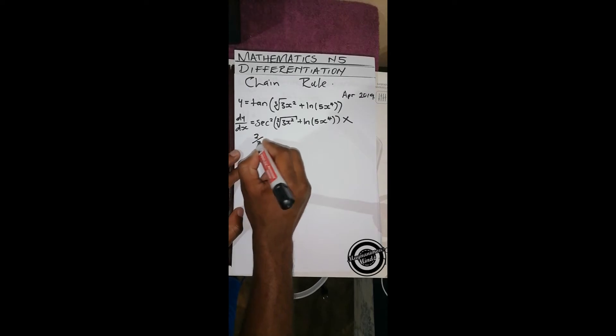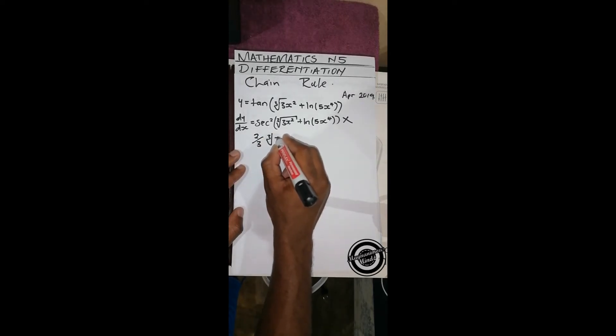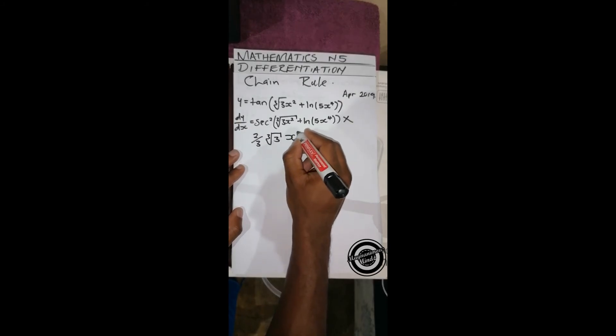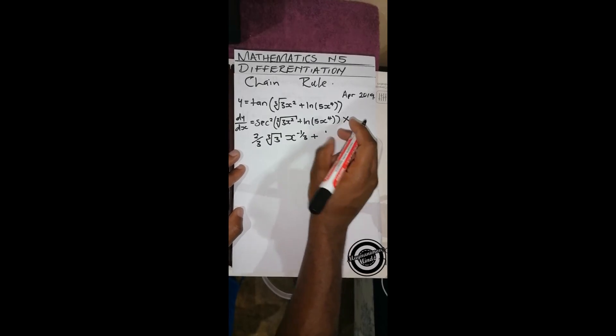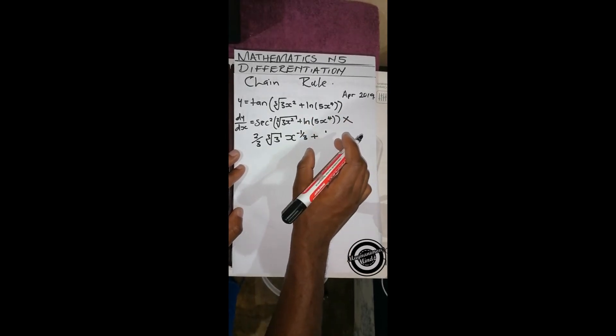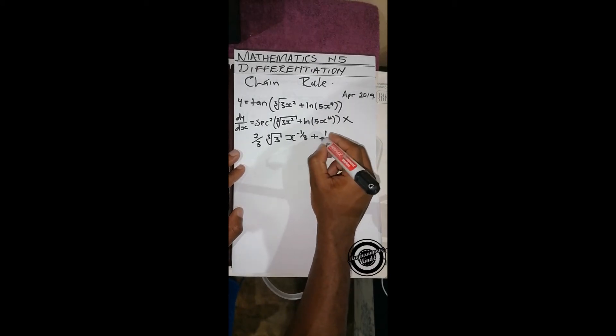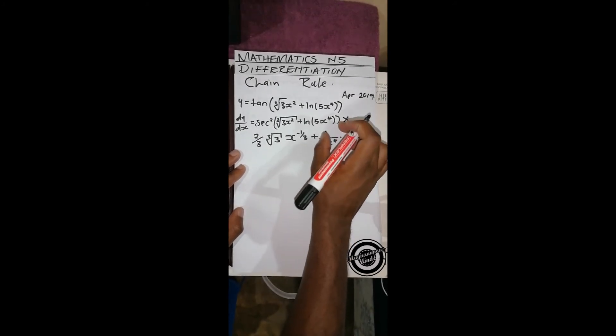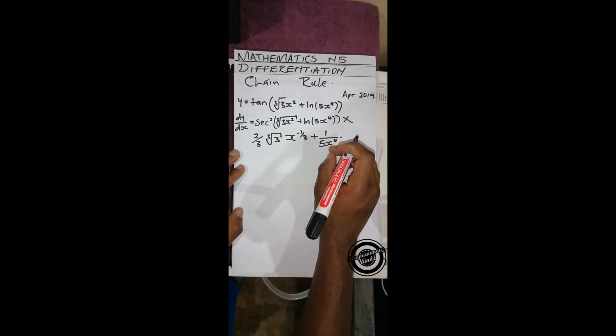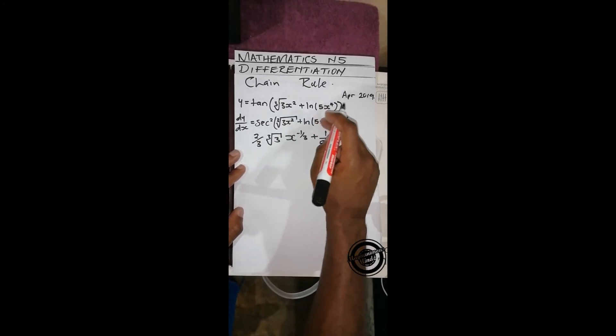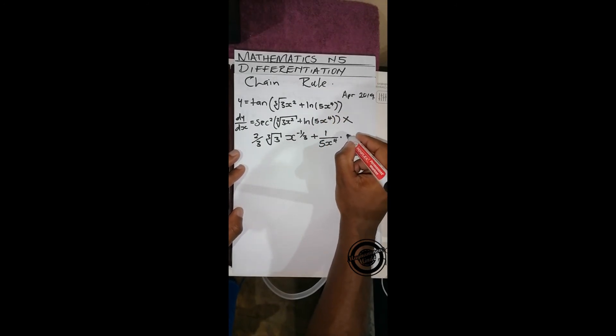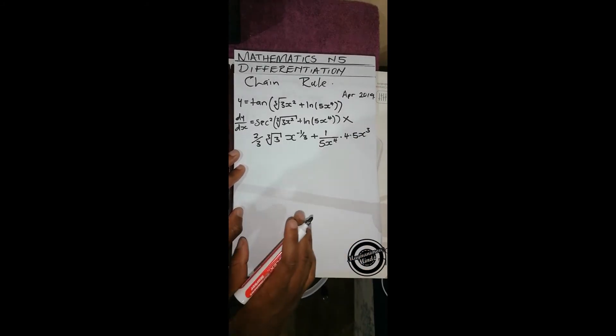2/3 times 3x squared to the power 1/3, plus... then here we've got ln. We start by differentiating ln - it's going to be 1 over 5x to the power 4. Then we'll apply chain rule again on this function, and if we do that, we'll be differentiating 5x to the power 4, which will give us 4 times 5x to the power 3.